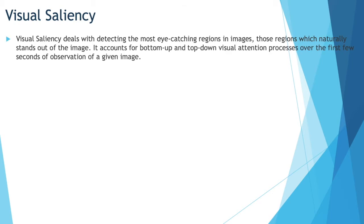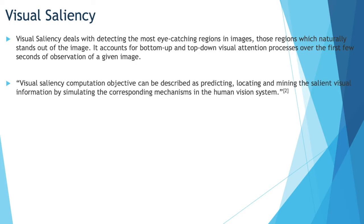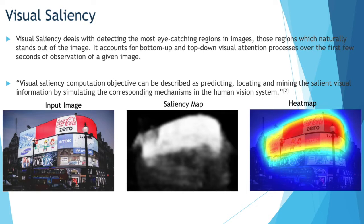What is visual saliency? Visual saliency deals with the imitation of a human vision system by catching the most important regions of images from a perceptual viewpoint. Its objective can be described as predicting, locating, and mining the salient visual information by simulating the corresponding mechanisms in the human vision system. Here is an example: we have an input image and the corresponding saliency map, which is a grayscale image encoding the intensity of the saliency of each pixel in a continuous range of 0 to 1, or 0 to 255 for unsigned 8-bit integers. On the right-hand side we have the heat map, which highlights the most important regions by overlaying the saliency map with the input image.